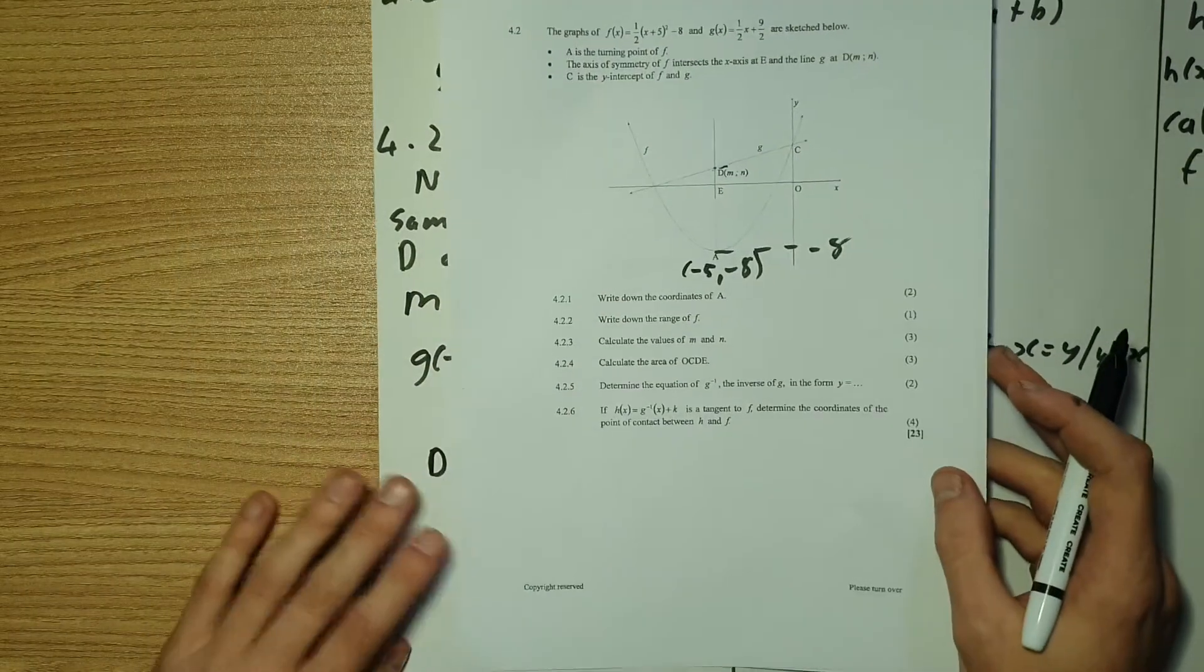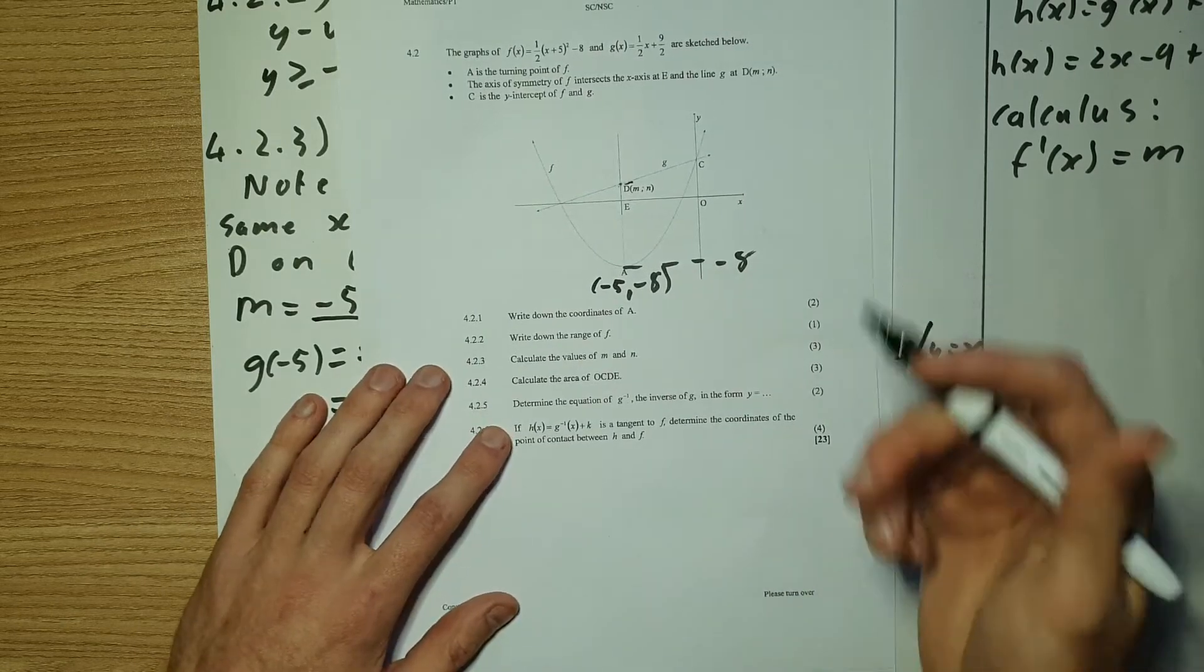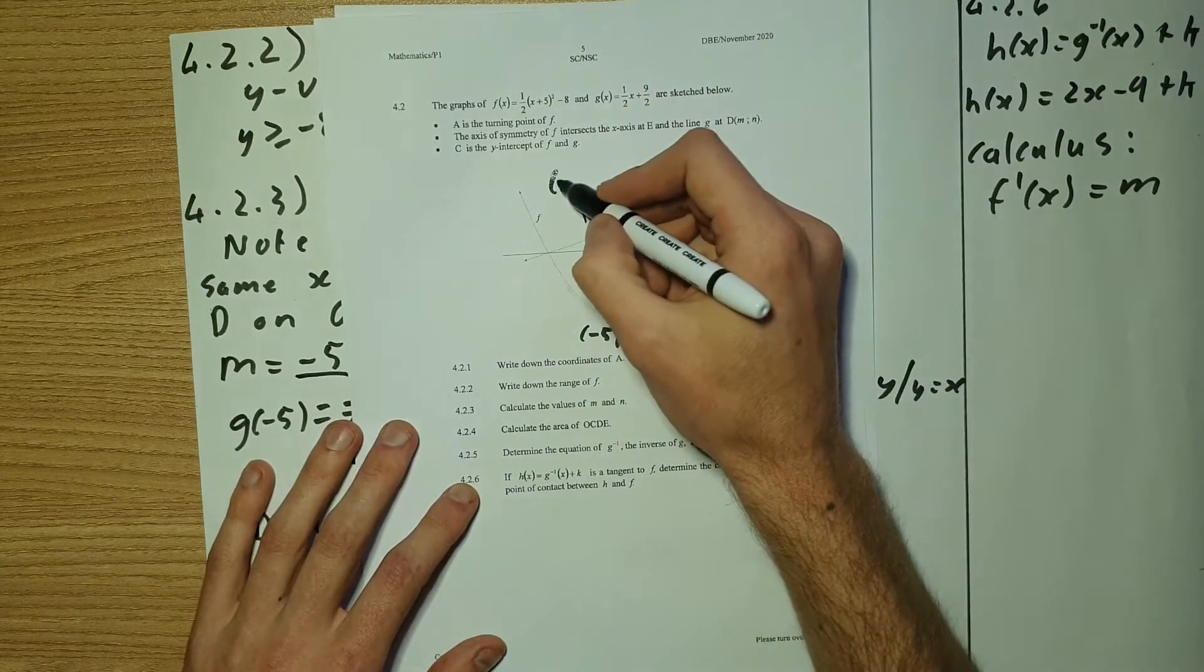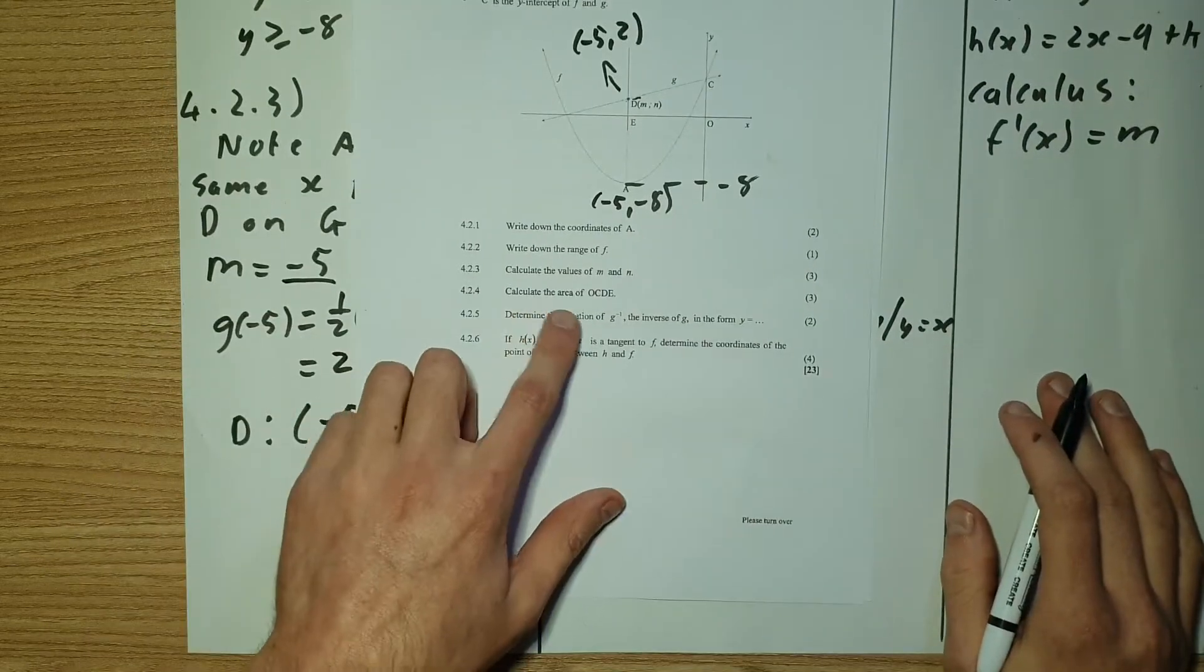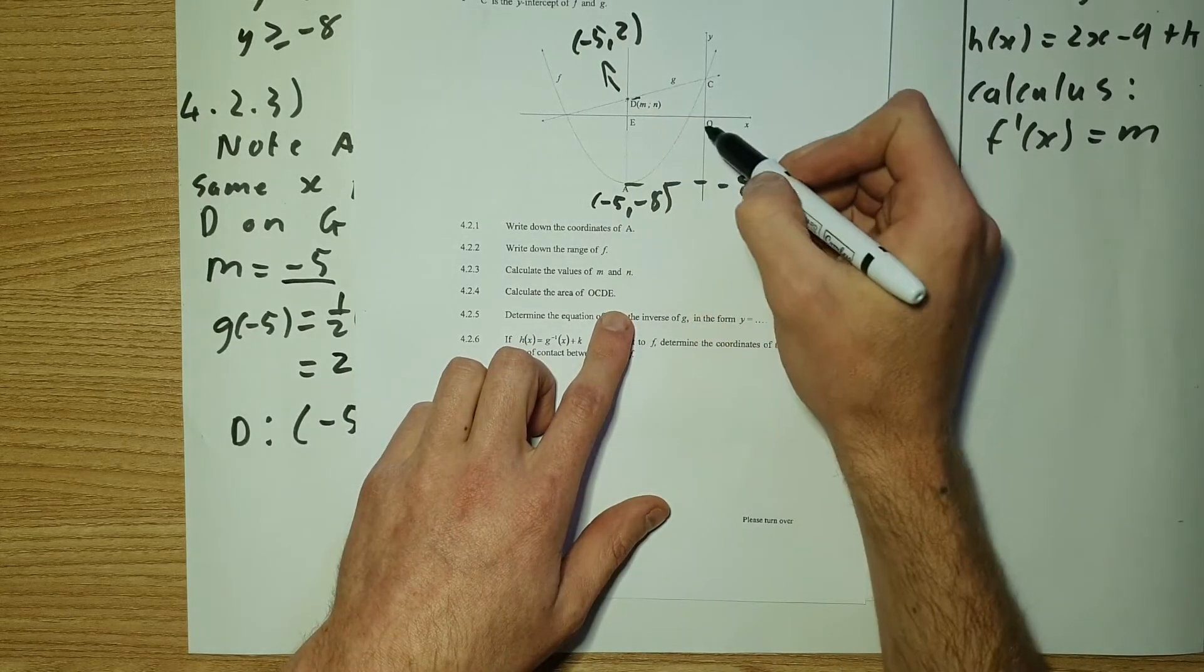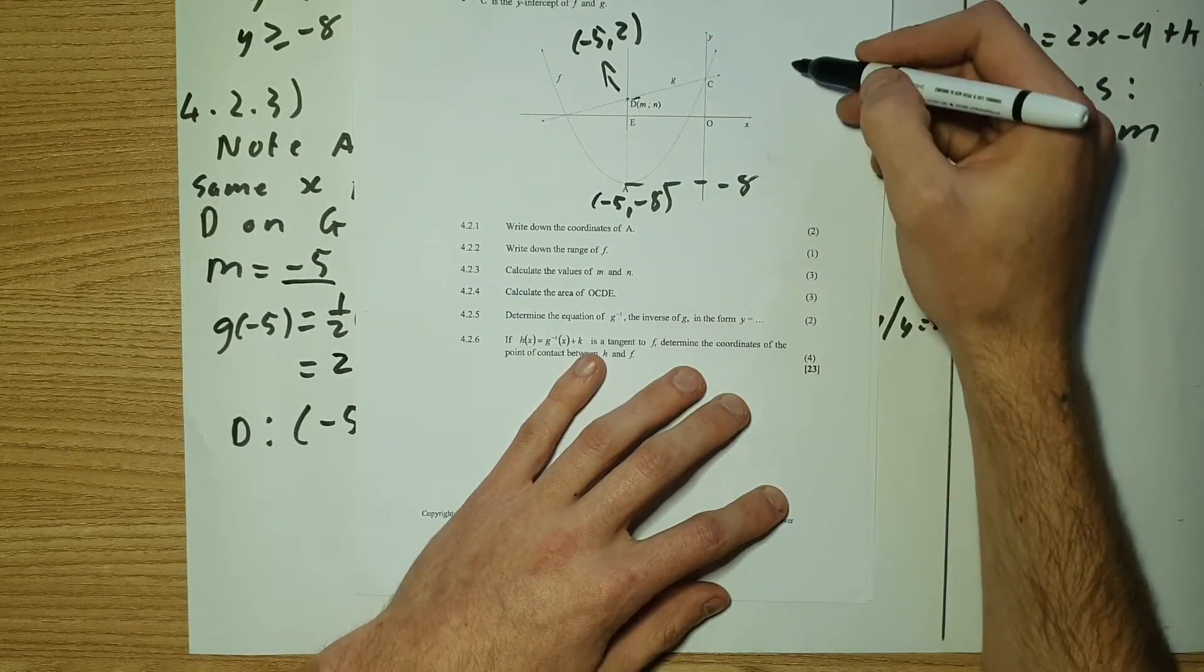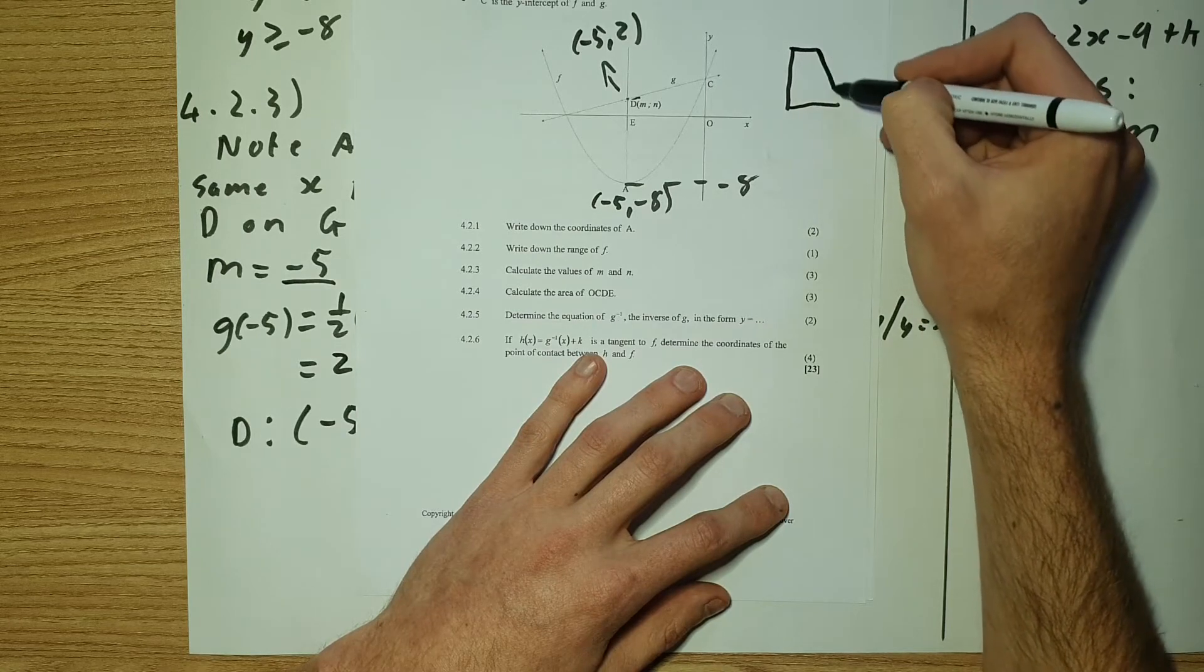Now, let's have a look at 4.2.4. Once again, don't forget to fill in your values that you found. So d, I'm just going to write up here. We found that to be negative 5 and 2. So 4.2.4 says, calculate the area of OCDE. So OCDE. So we have a trapezium sitting over here, but now it's lying on its side.